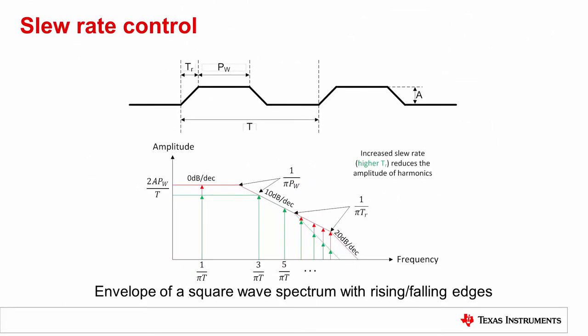Slew rate control functionality can be incorporated into clocking devices to modify the edge rate. The slew rate control feature allows one to select the optimum slew rate for the application by register programming or pin control. A slower slew rate setting benefits radiated emissions, while a higher slew rate benefits jitter performance.